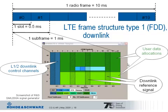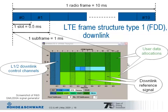Let's have a closer look at the subframe contents. A subframe of 1 millisecond is illustrated in a screenshot from a Rohde & Schwarz signal generator — this is a real signal. The x-axis shows the time domain, with an extract of 1 millisecond or 14 OFDM symbols for the normal configuration. The y-axis shows the frequency domain with 50 resource blocks, corresponding to a 10 MHz signal.